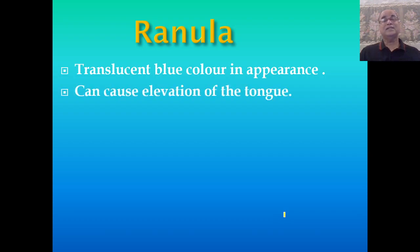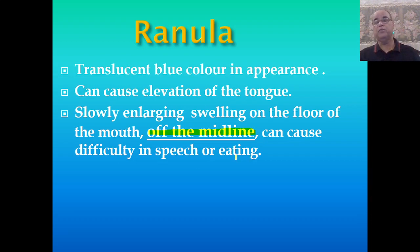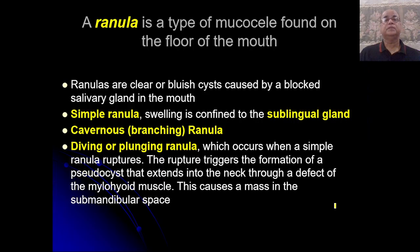Due to its size, ranula can cause elevation of the tongue. It is a slowly enlarging swelling on the floor of the mouth, away from the midline. It occupies the lateral part of the floor of the mouth and can cause difficulty in speech or eating by hampering the movement of the tongue. The lesion generally occurs due to trauma, but it can also occur due to sialolith, congenital duct obstruction, stenosis, periductal fibrosis, or any tumor at the floor of the mouth. They are clear bluish cysts caused by blocked salivary glands.